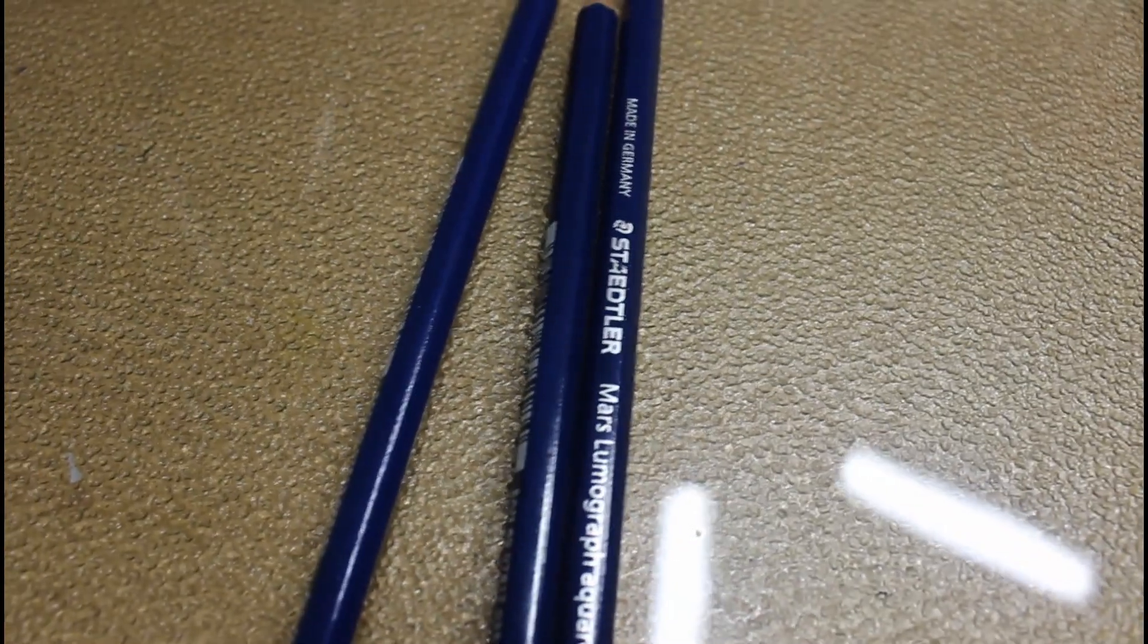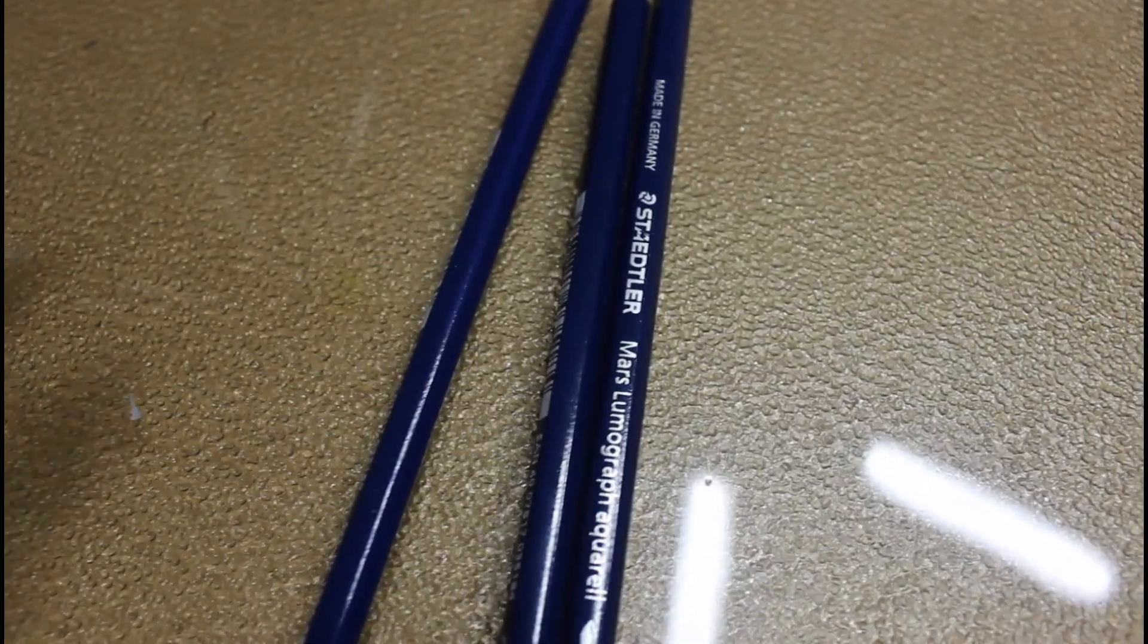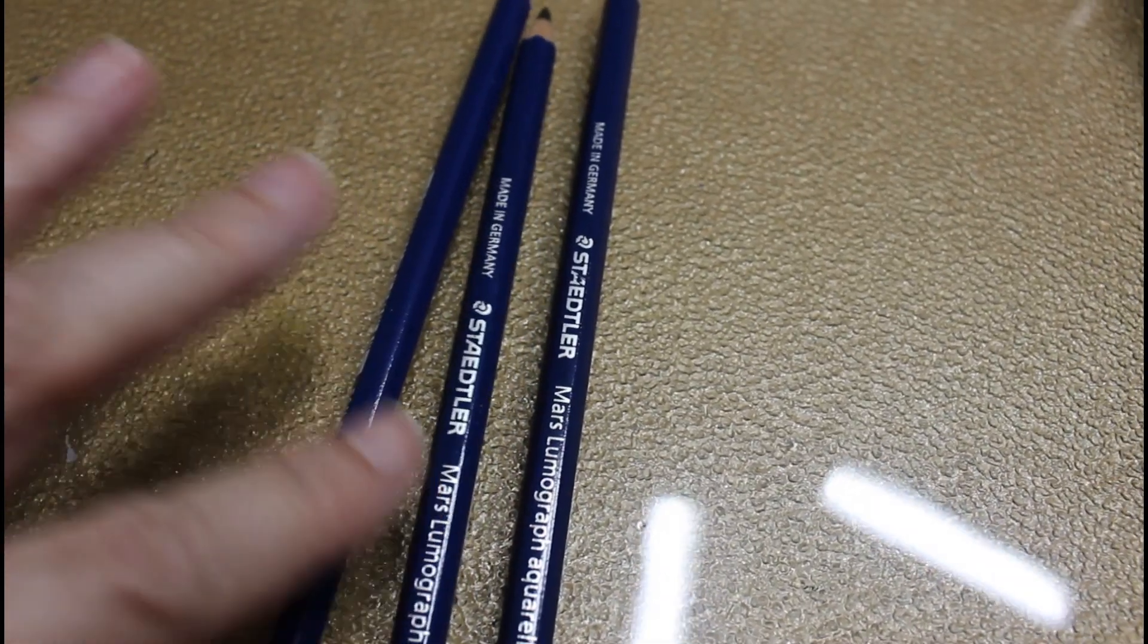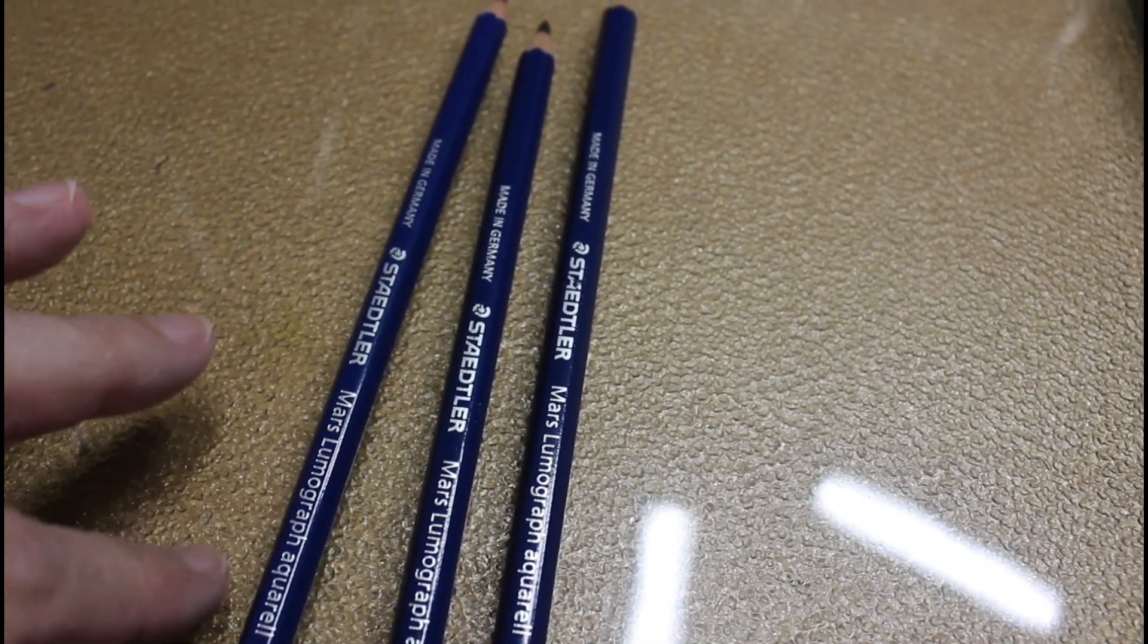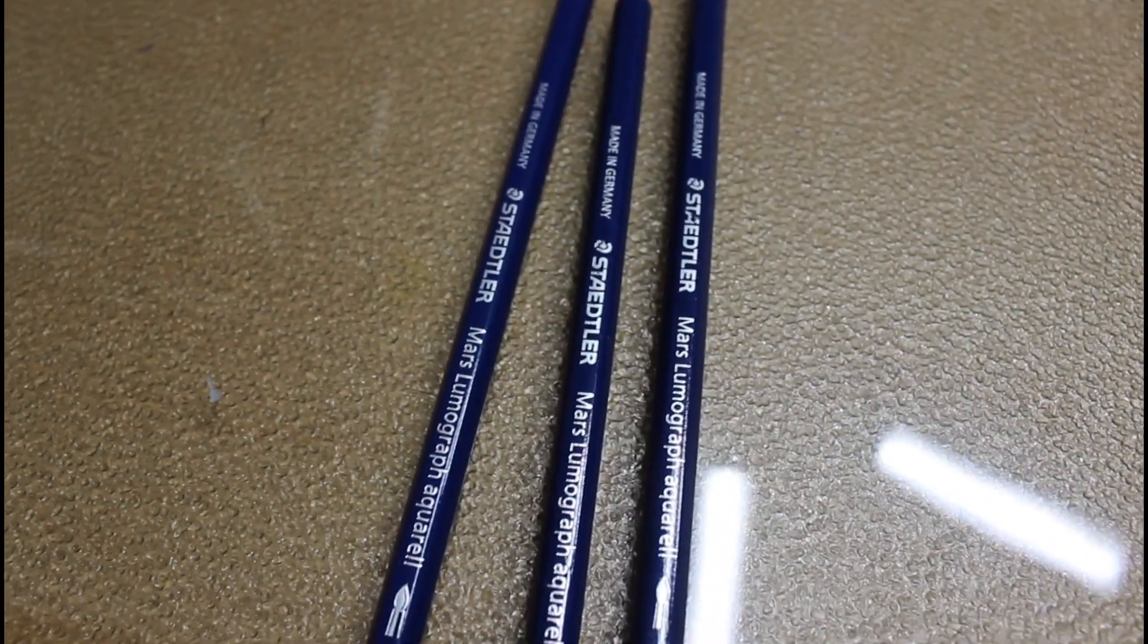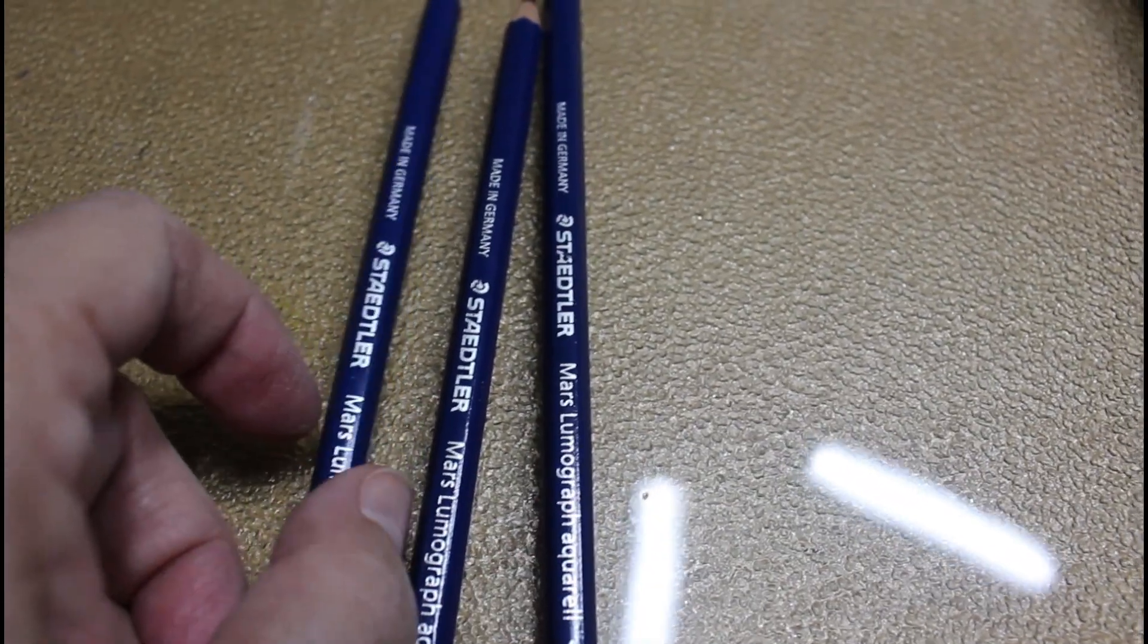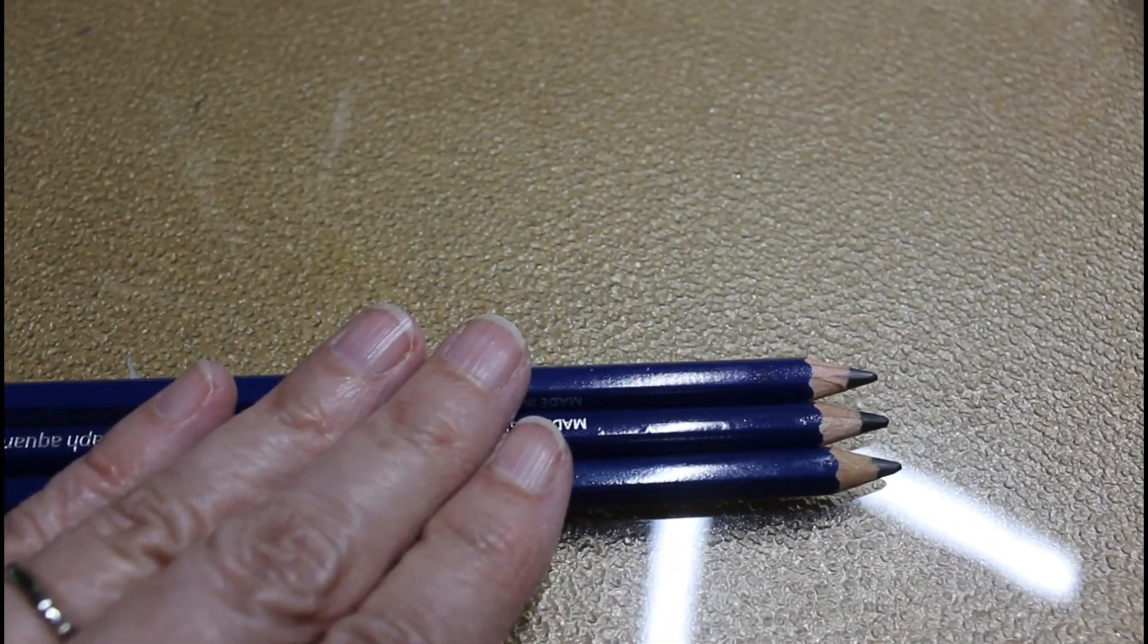These are watercolor graphite pencils made in Germany. And I'll try to say the name right. It's a Staedtler, Staedtler, something like that. And they come in 4B, 6B, and 8B. And the 4B is the lightest. 6B and 8B are darker.